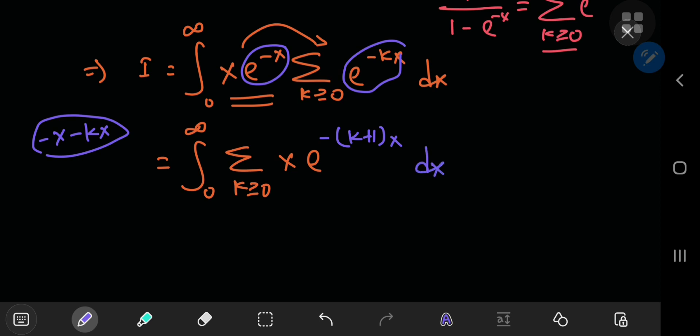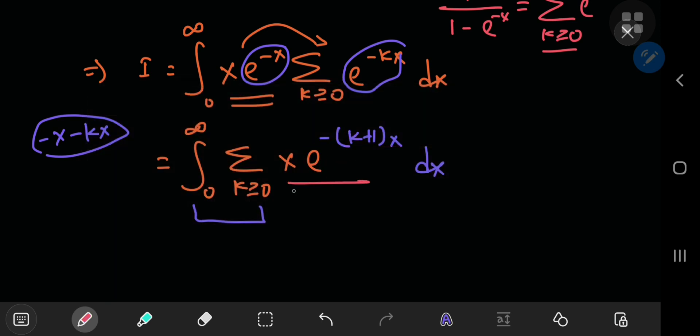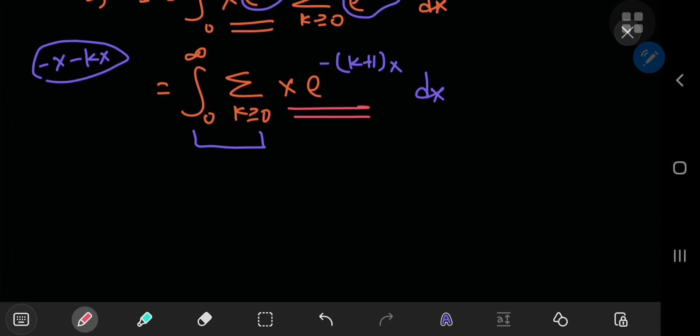Can we switch up the order of the integration and the summation operators to actually make our lives easier? Well, if you look at the structure of the function under the sigma notation, then we have e to some negative exponent times a linear polynomial x. So obviously there are no problems whatsoever with convergence.